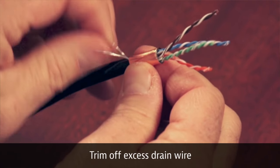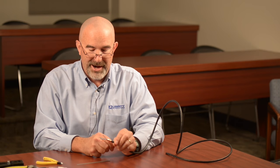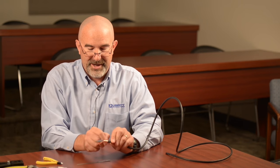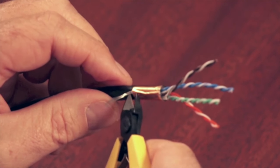Now I can trim off my excess drain wire. You might have a solid drain wire or a stranded drain wire - it's not going to matter here. Trim off your excess past the copper tape.